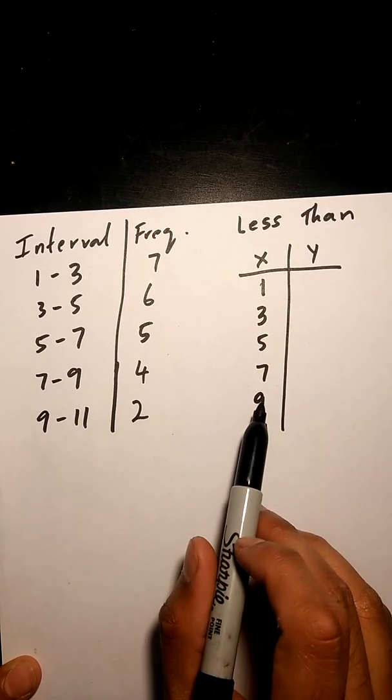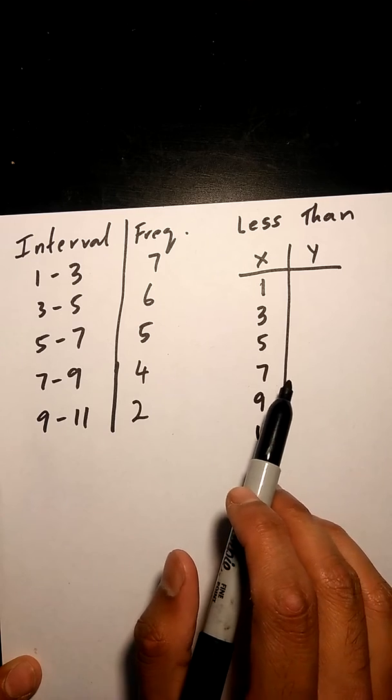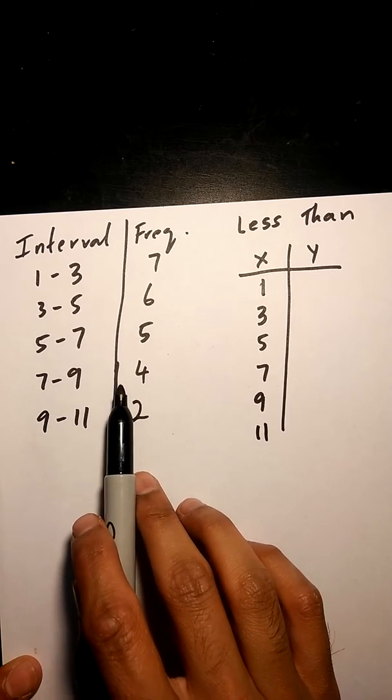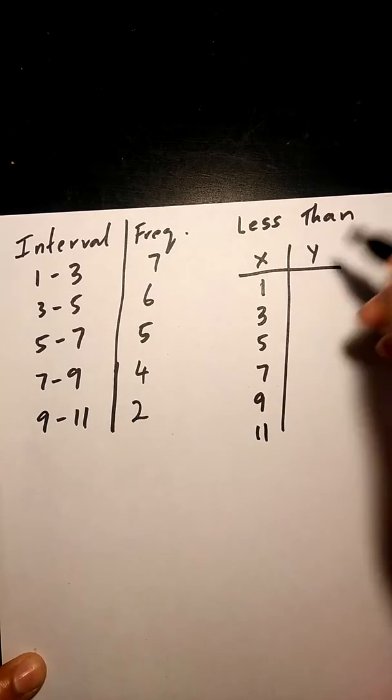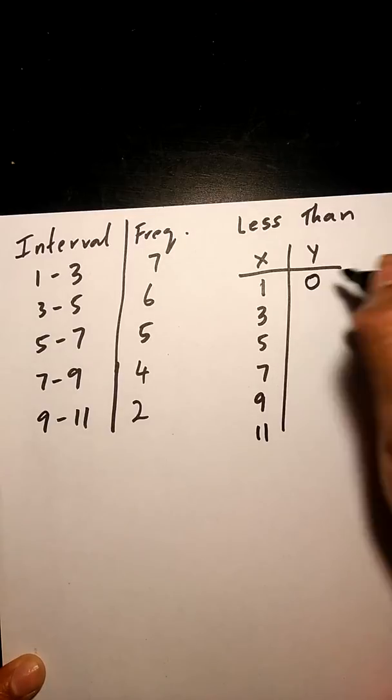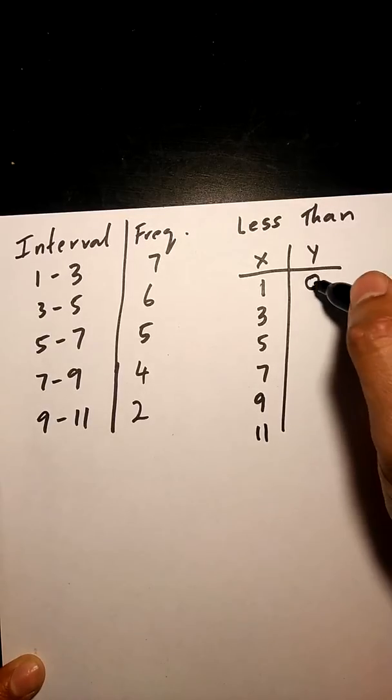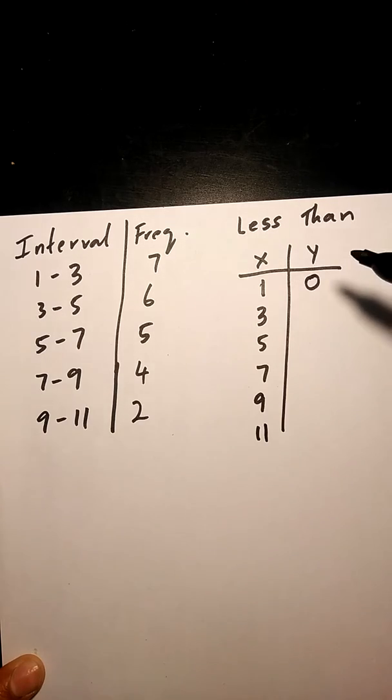So you have one extra row in your cumulative frequency tables if you compare them to your frequency tables. The less than cumulative frequency table always starts at 0. And then you are adding values from your frequency table.